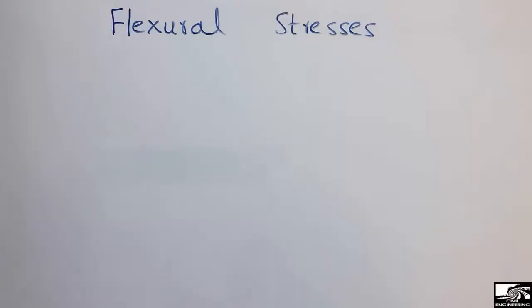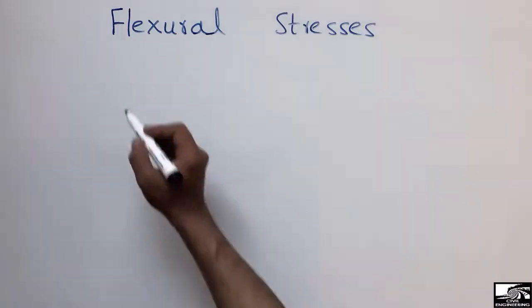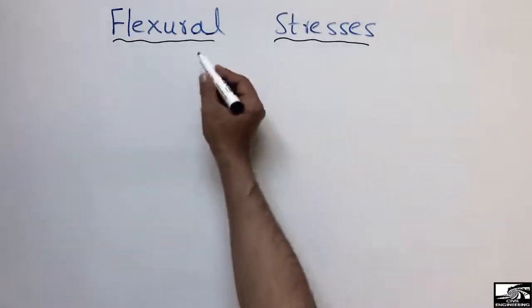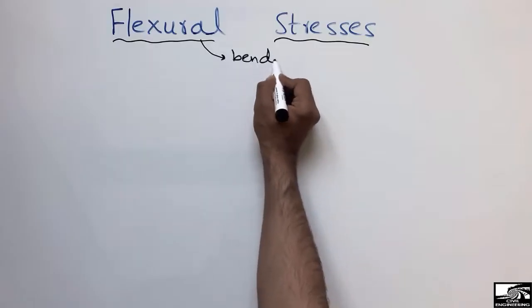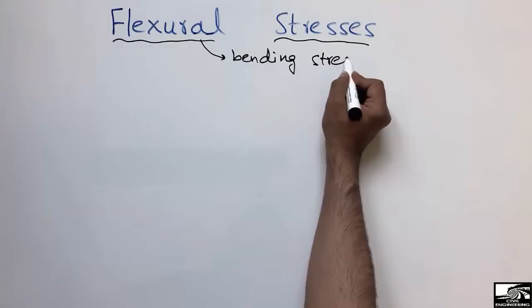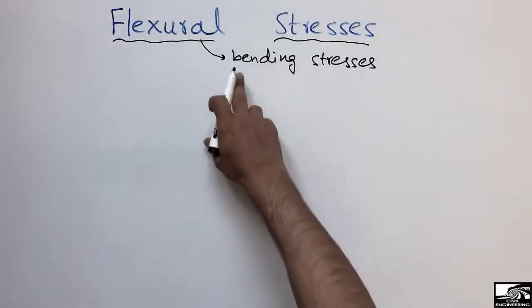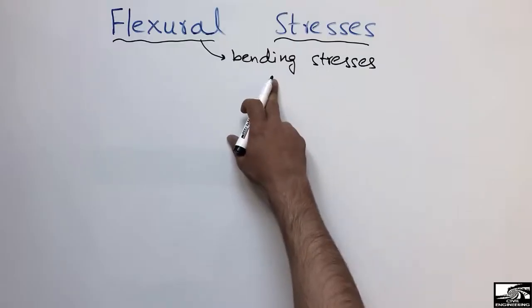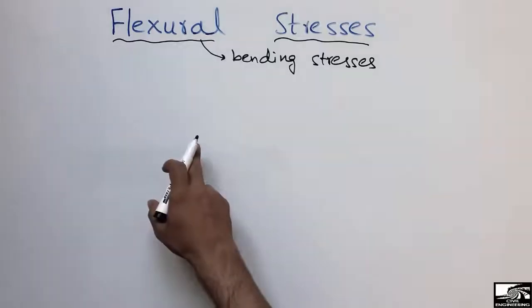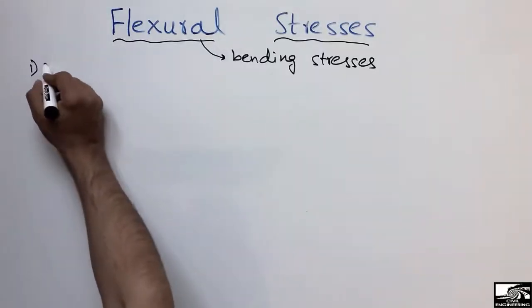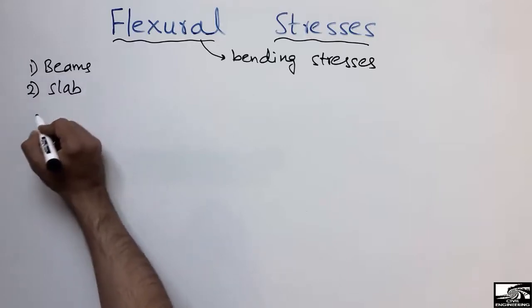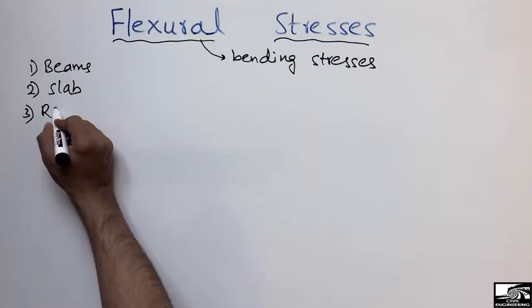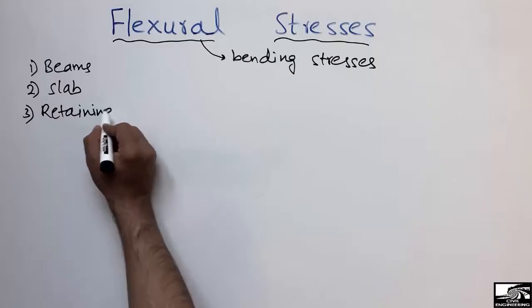Hello guys, welcome back to the Seven Engineering YouTube channel. Please subscribe our channel for daily Seven Engineering videos. Today our lecture is about the flexure stresses, also known as the bending stresses. These are the stresses occurring from the bending of any structural member, and they are most commonly occur in beams, slabs, and retaining walls.